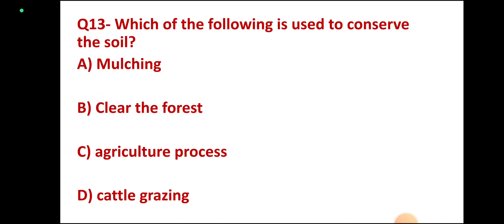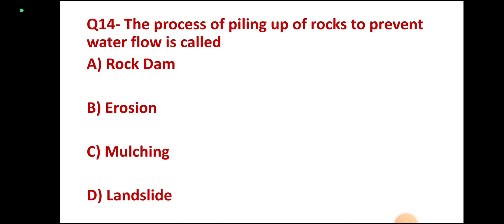Question 13: Which of the following is used to conserve the soil? Options: mulching, clear the forest, agriculture process, cattle grazing. Correct answer: mulching.